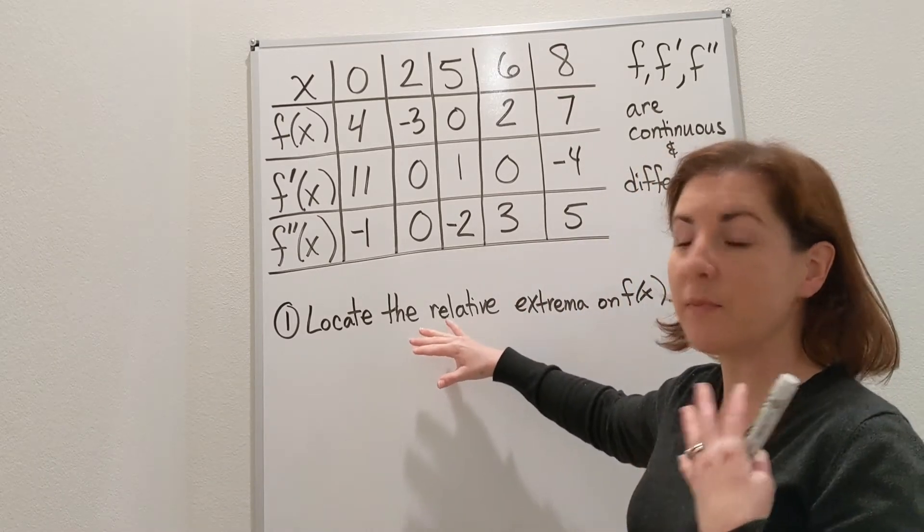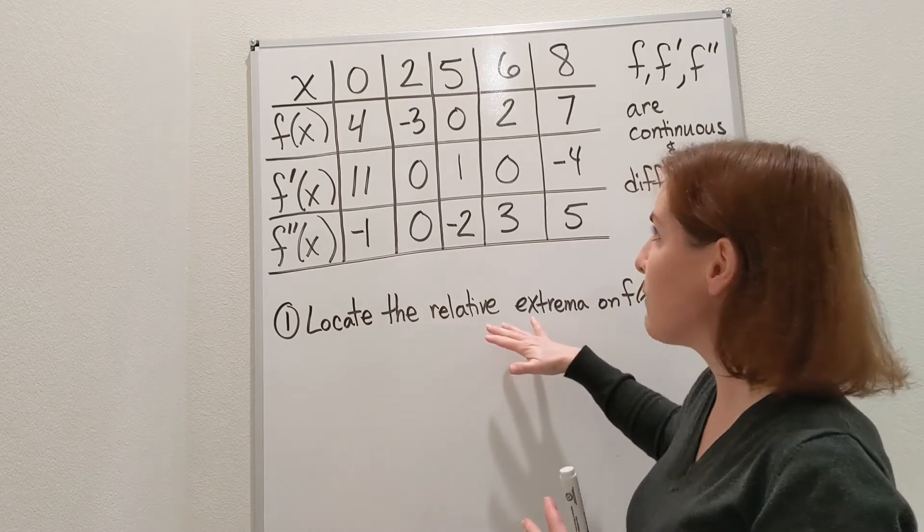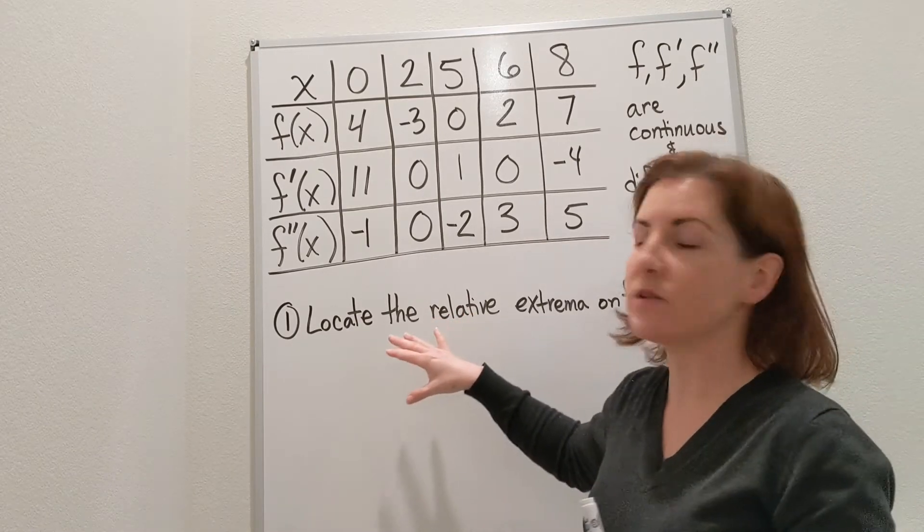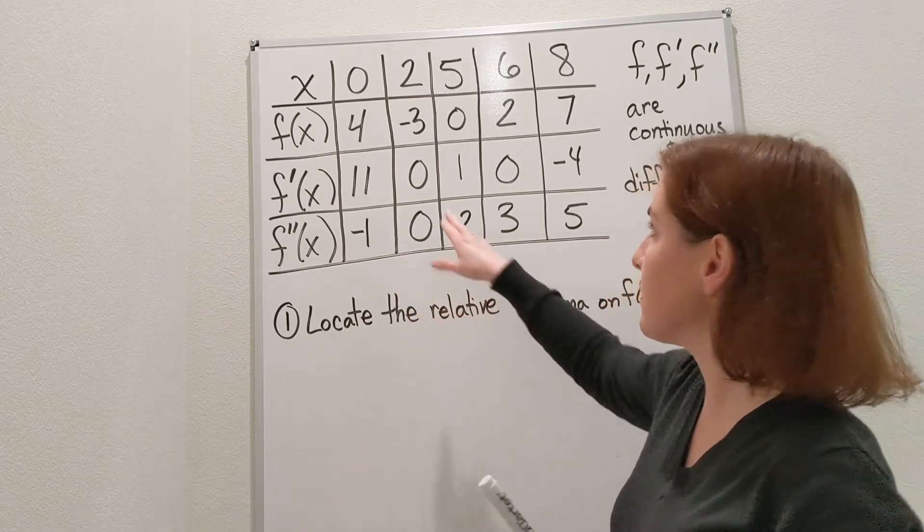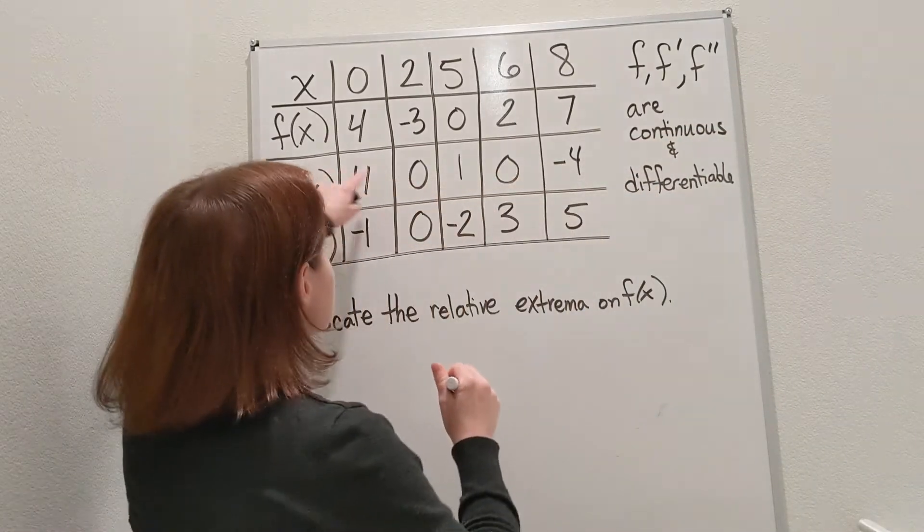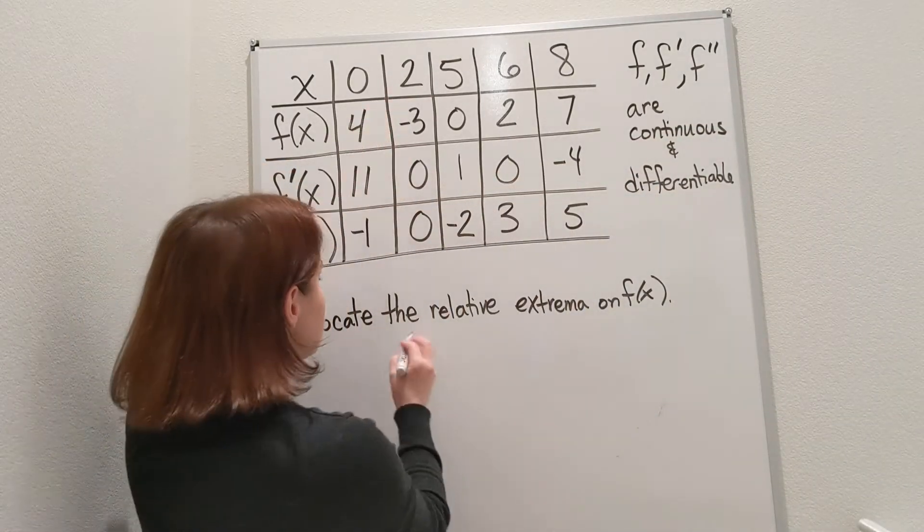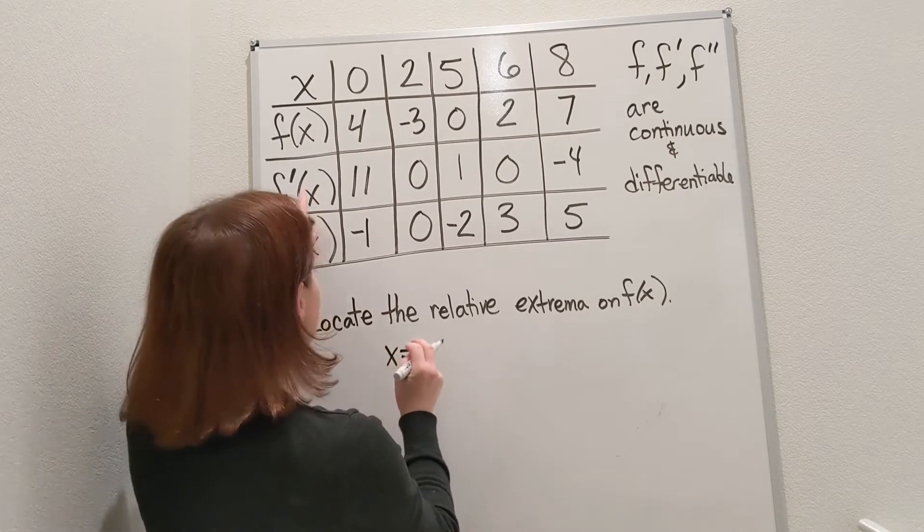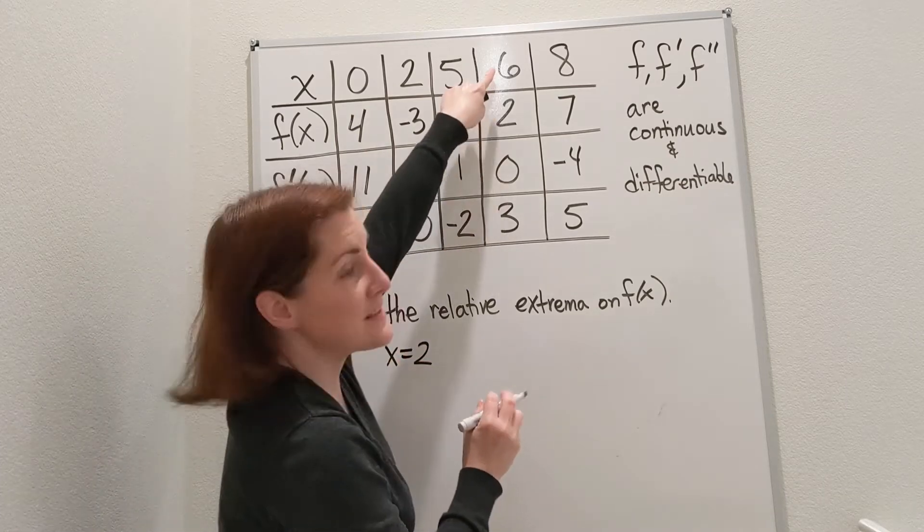To do that, to get the possible places where this could happen, I'm looking for the critical numbers. I want to see the first derivative equal to zero. So where's the first derivative zero? The first derivative is zero at x=2 and also zero at x=6.